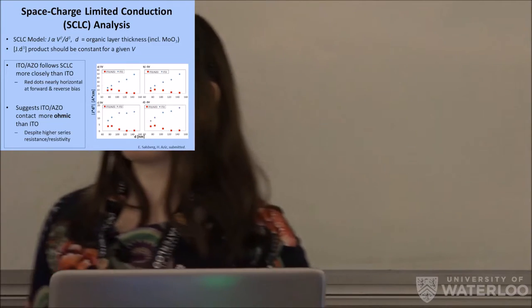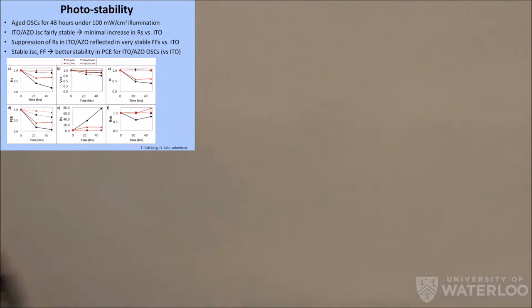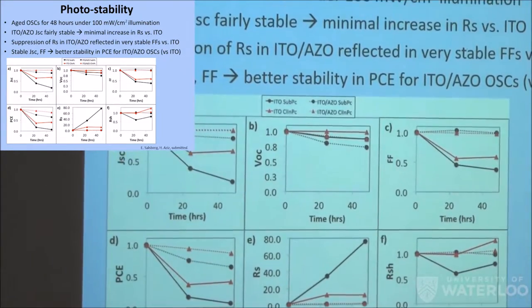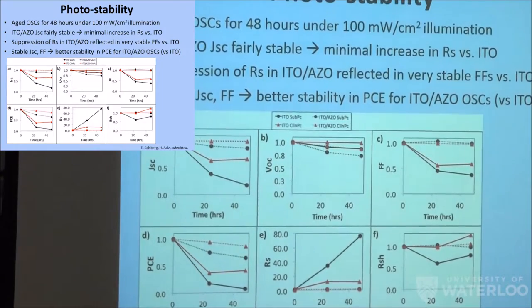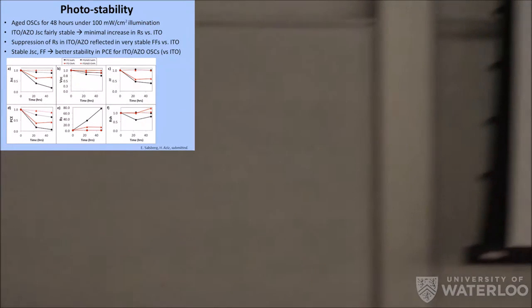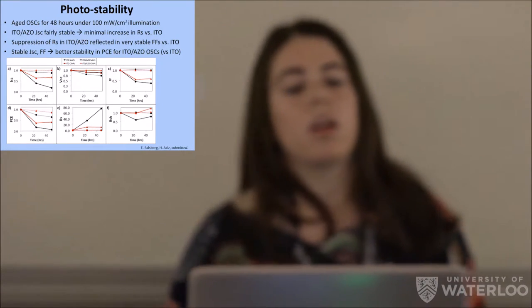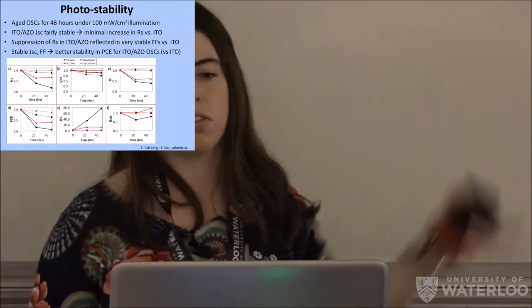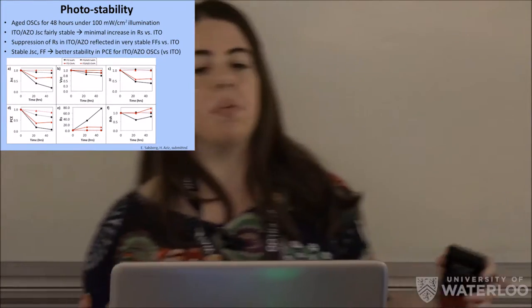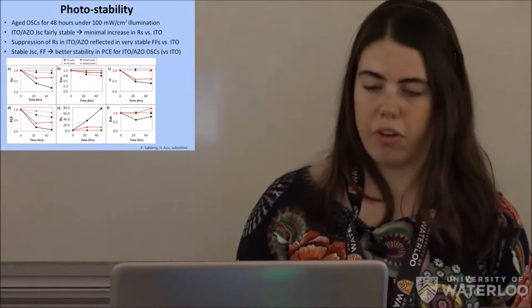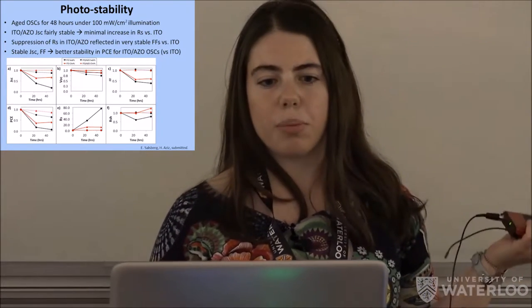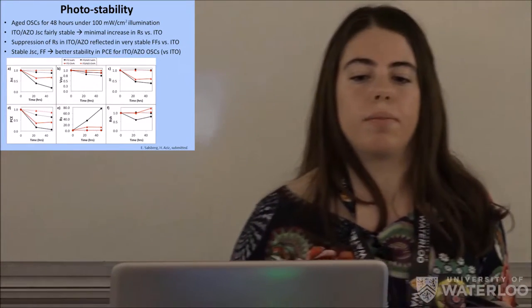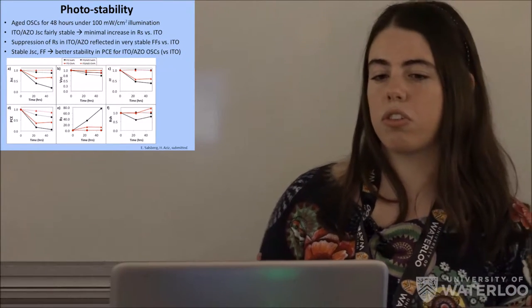So what does this mean as far as photostability is concerned? So we aged the solar cells with the data you just saw earlier for 48 hours under 100 milliwatts per centimeter squared or one sun illumination. And we did this for 48 hours, so just like leaving a solar cell out in the sun like it would under normal operation. And we find that the photocurrents that's in panel number A are actually very, very stable. So these are normalized plots. It's not that the photocurrent value is one. So it's normalized to the initial value that you saw on the table. So the photocurrent barely changes at all for the ITO azo devices. Those are the dotted lines. And whereas it changes significantly for ITO, which are the solid lines.